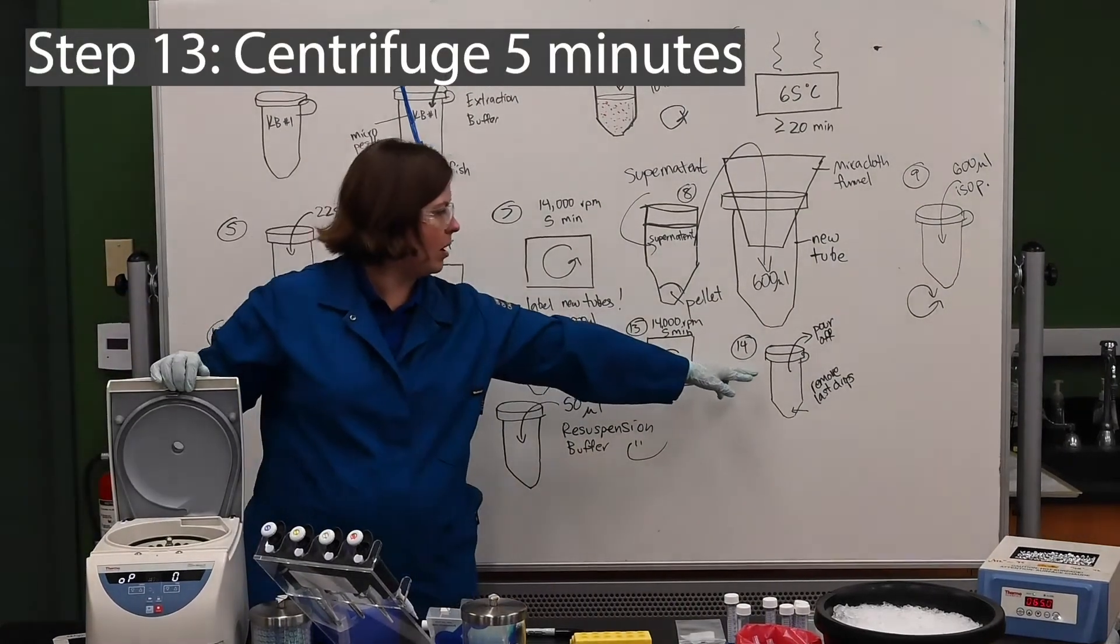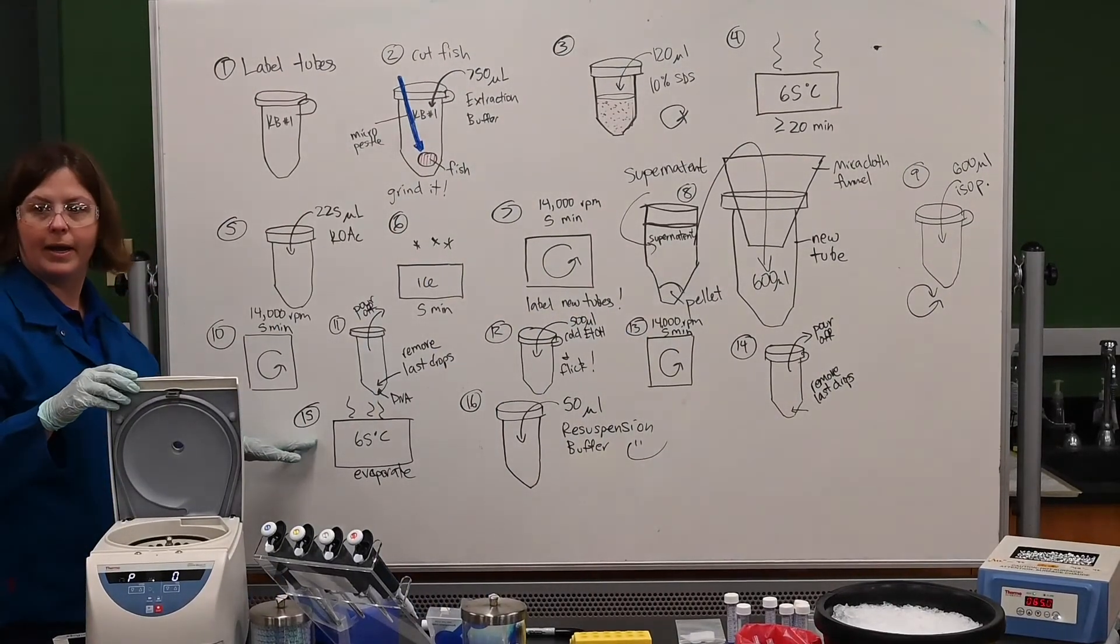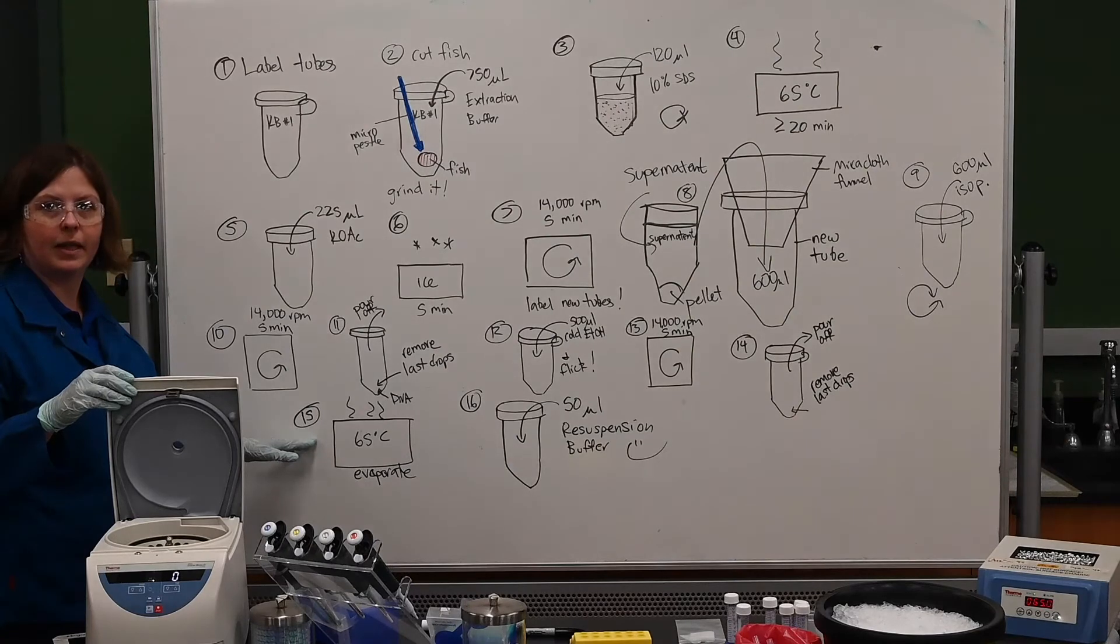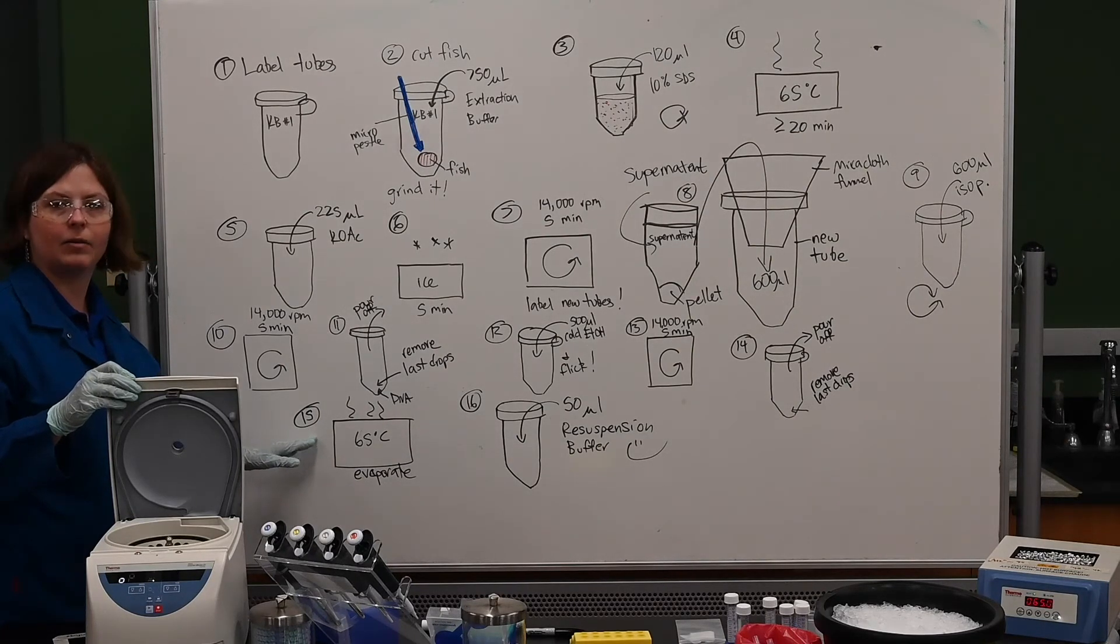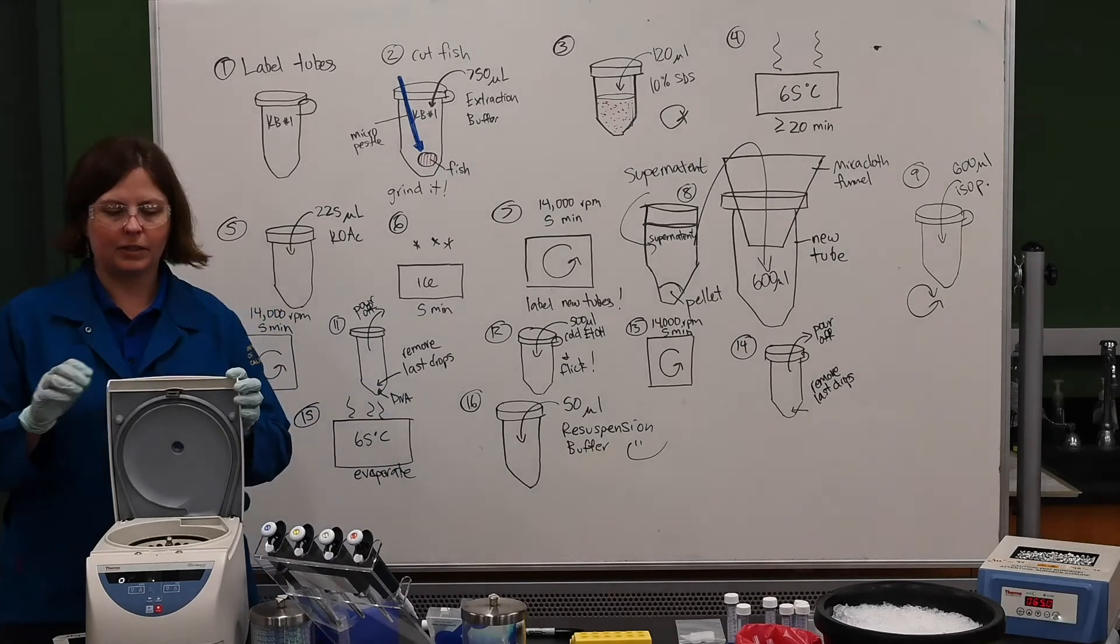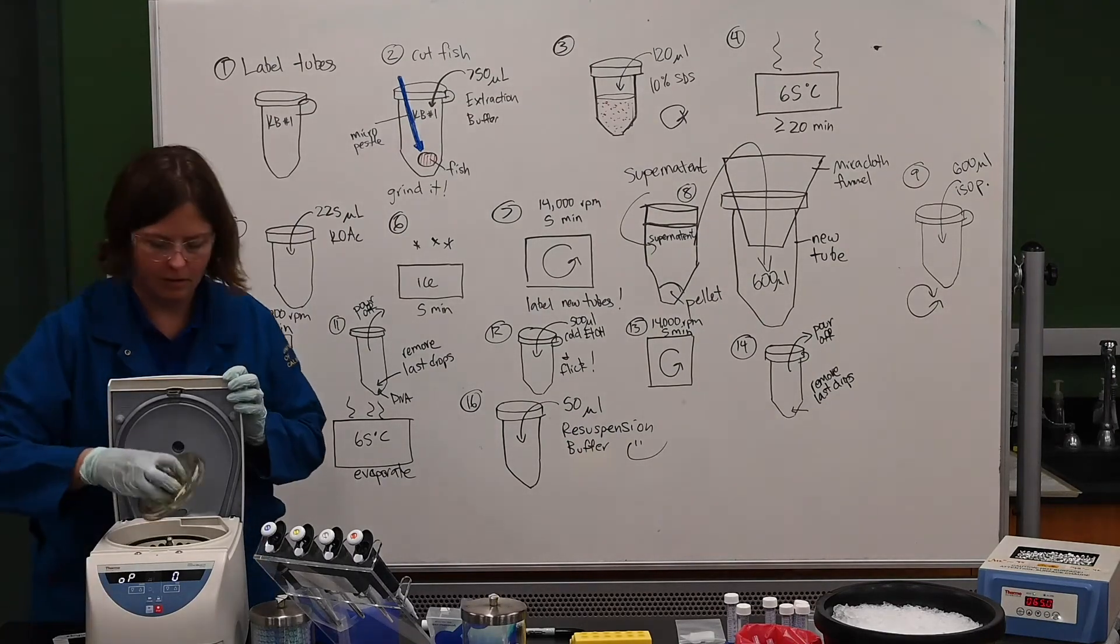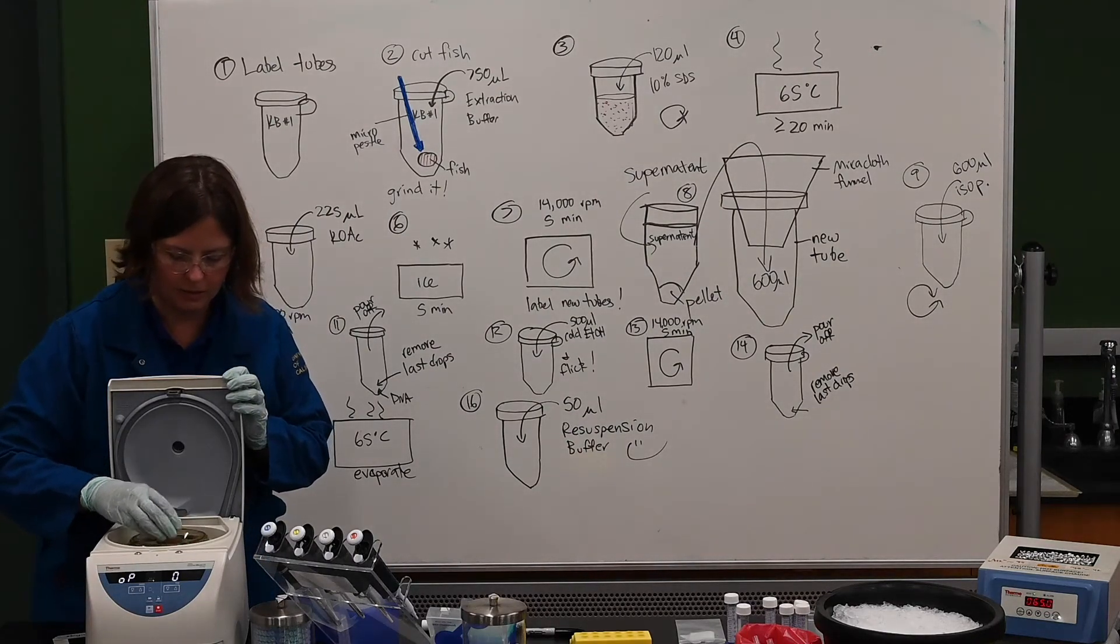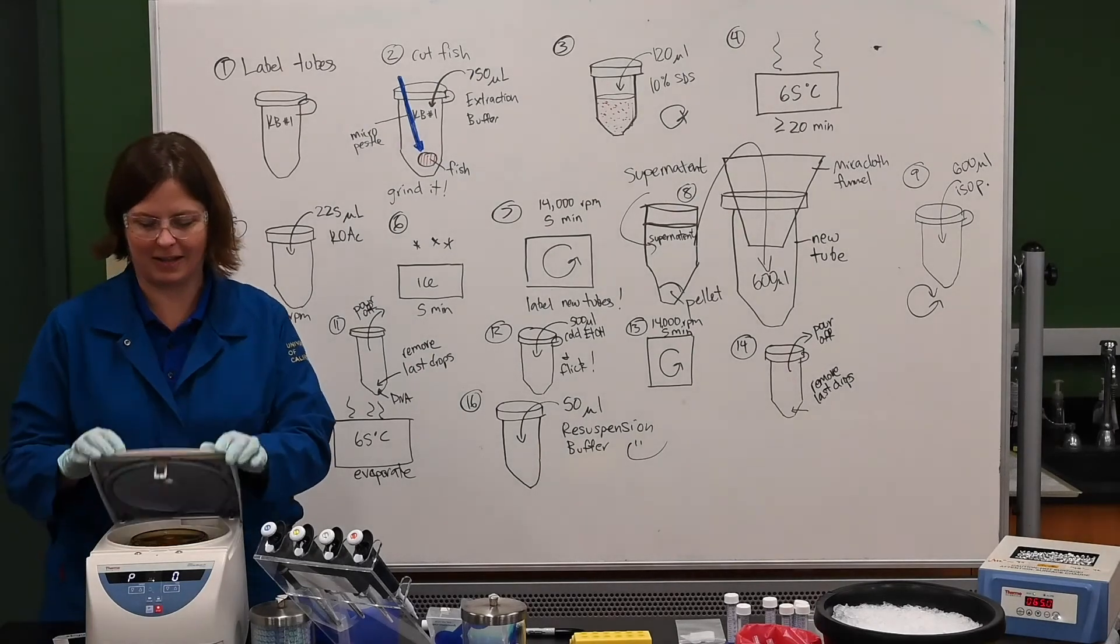I promise this is the last spin. So after this, I'm going to pour off the ethanol. Let it dry in my heat block to try to get the last of the alcohol off. Because alcohol would inhibit or slow down or stop the next step in our analysis, which is our PCR. So once that's completely evaporated, we'll then add some resuspension buffer, which is just liquid that will help keep the DNA from degrading and allow us to use it. And then we're done. So five minutes, last spin.